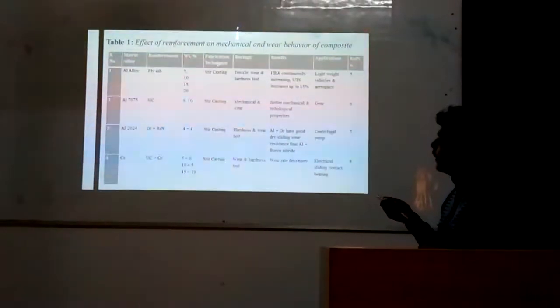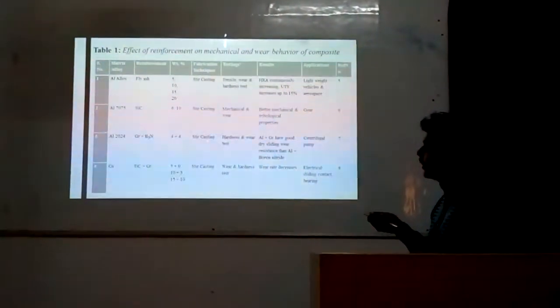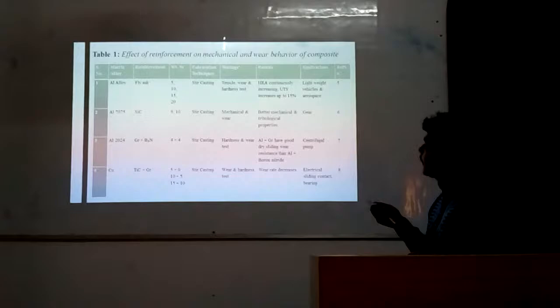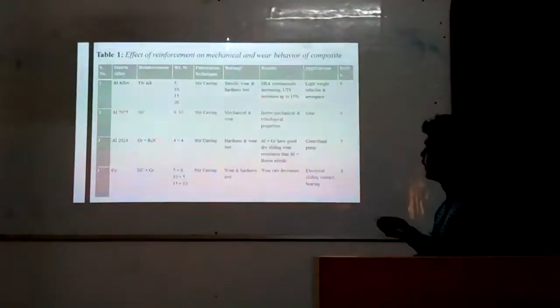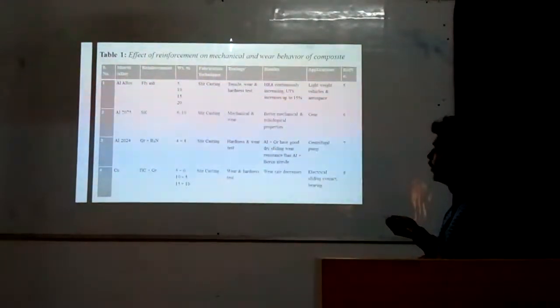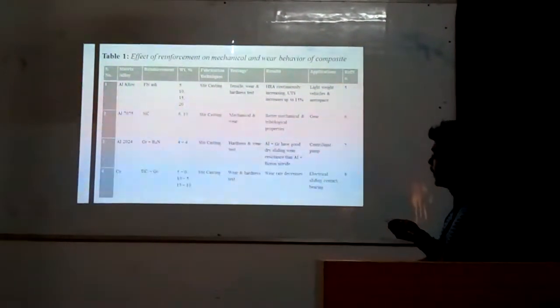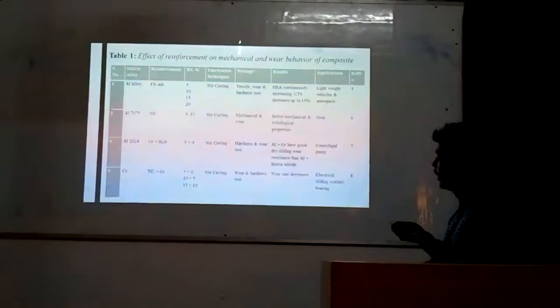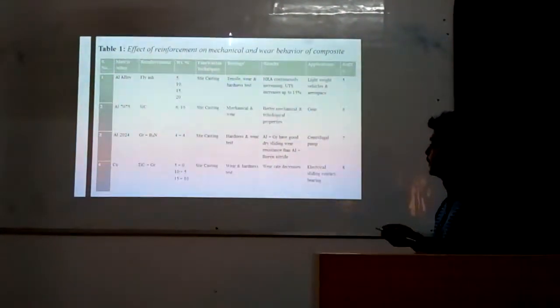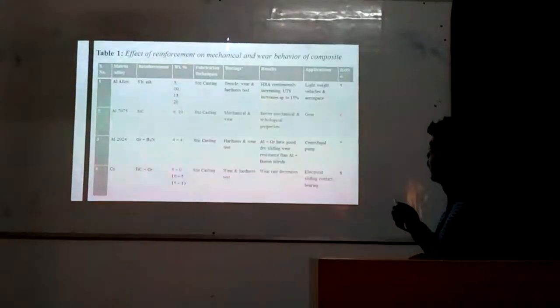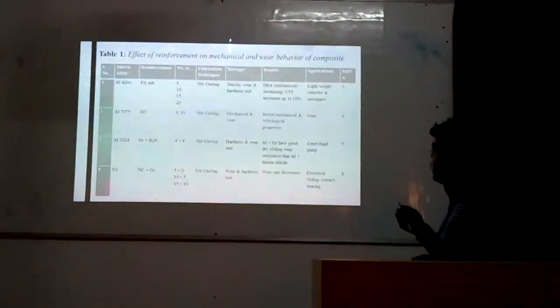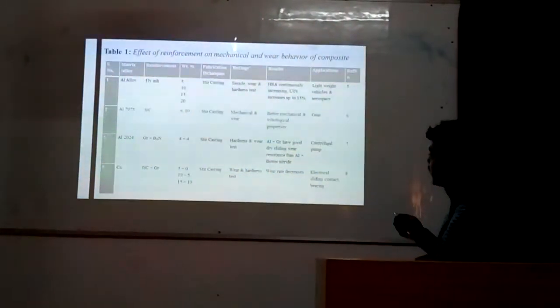Aluminum is mixed with graphite and 4% boron nitride. Fabrication technique used is steel casting. Testings performed are hardness and wear test, and the results show aluminum and graphite have good sliding wear resistance than aluminum and boron nitride. This can be utilized inside the hydraulic pump, details are given in reference number 7.